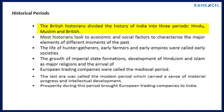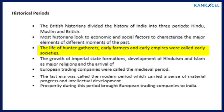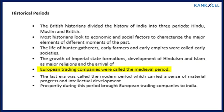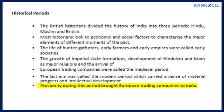British historians divided the history of India into three periods: Hindu, Muslim, and British. Most historians look to economic and social factors to characterize the major elements of different moments of the past. Early societies included hunter-gatherers, early farmers, and early empires. The growth of imperial state formations, development of Hinduism and Islam as major religions, and the arrival of European trading companies were called the medieval period. The last era was called the modern period, which carried a sense of material progress and intellectual development.